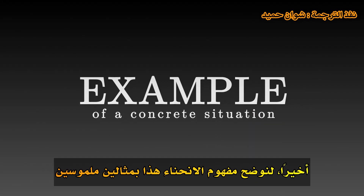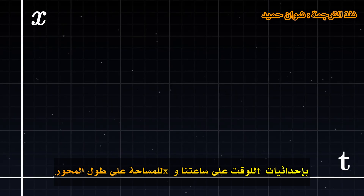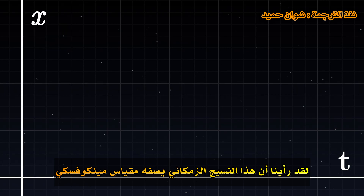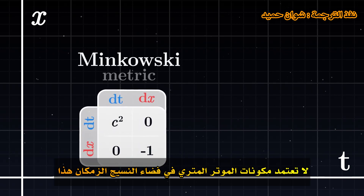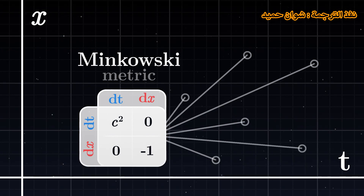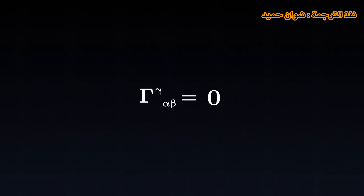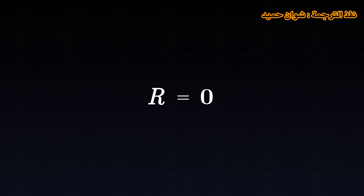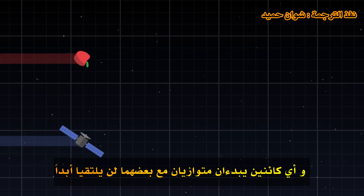Finally, let's illustrate this concept of curvature with two concrete examples. The first example is that of an empty spacetime, with coordinates t for time and x for space along an axis. We saw that this spacetime is described by the Minkowski metric. The components of the metric tensor in this empty spacetime do not depend on the coordinates — they are the same everywhere on the grid. Consequently, their derivatives are zero, which implies that the Christoffel symbols are all equal to zero. Therefore, the Riemann and Ricci tensors and the Ricci scalar all vanish. The Minkowski spacetime is flat, it has no curvature, and two objects starting parallel to each other will never meet.